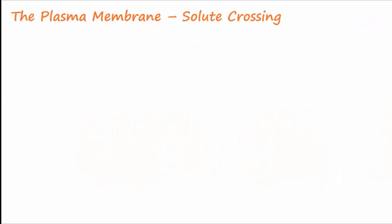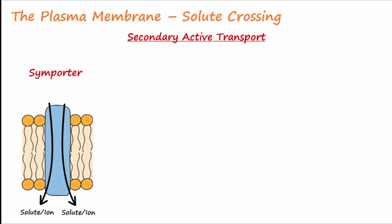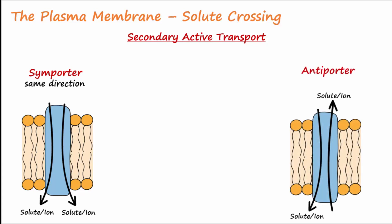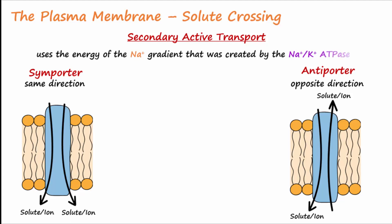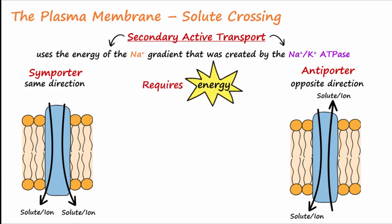The final method discussed today is secondary active transport. Secondary active transport involves a symporter, which moves two solutes or ions in the same direction, or an antiporter, which transports two solutes or ions in the opposite direction. Secondary active transport uses the energy of the sodium gradient, which was created by the sodium-potassium pump. It is unique in that it requires energy, but not in the form of ATP directly.